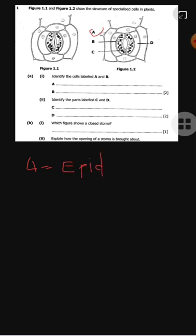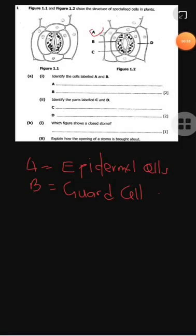Cell B are called the guard cells. They protect the entering and coming out of substances in a cell, for example oxygen, carbon dioxide, and water as well. Part labeled C is the chloroplast and part labeled D is the cytoplasm.